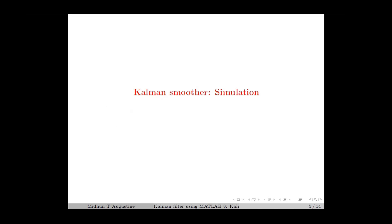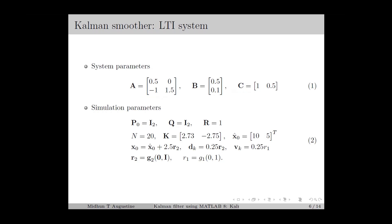Next, we move on to the simulation of the Kalman Smoother. For the Kalman Smoother simulation, we start with a linear time-invariant system for which the system matrix, input matrix, and output matrix are chosen as in equation number 1. The simulation parameters are chosen as in equation number 2, which is the same as the Kalman filter example. Here, we select the initial state x0, the disturbance vector dk, and the noise vector vk as Gaussian random vectors.